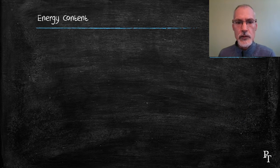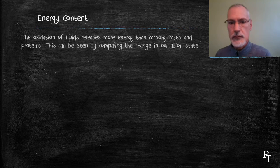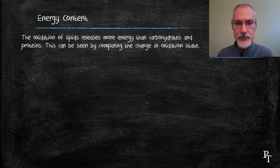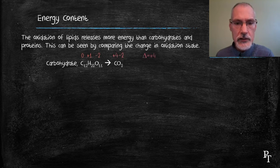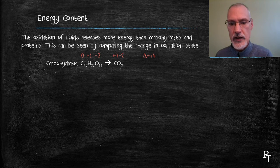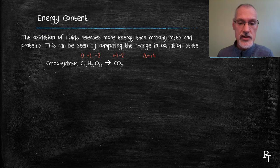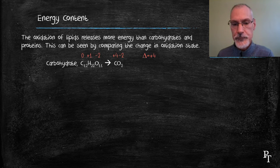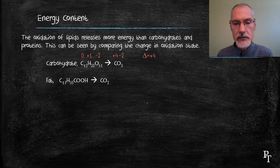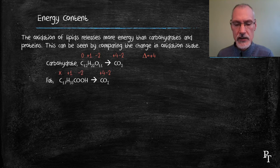Now I want to look a little bit more at the energy content from two perspectives. Let's look at something about their oxidation states. If I consider a carbohydrate — in this case, sugar — when sugar undergoes respiration, it turns into carbon dioxide, and I can see that the oxidation state of carbon has changed from zero to plus four. If I consider a fat — in this case, stearic acid — converting to carbon dioxide, it also changes to a plus four state, but let's figure out what that initial state is.